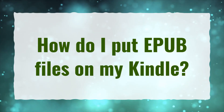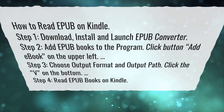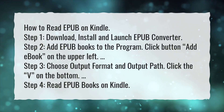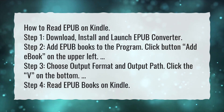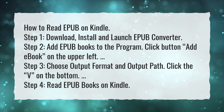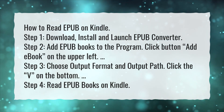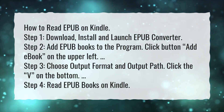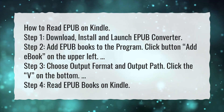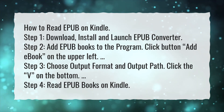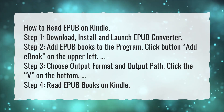How do I put EPUB files on my Kindle? How to read EPUB on Kindle: Step 1, download, install and launch EPUB converter. Step 2, add EPUB books to the program — click the 'Add Ebook' button on the upper left. Step 3, choose output format and output path, then click the checkmark on the bottom. Step 4, read EPUB books on Kindle.